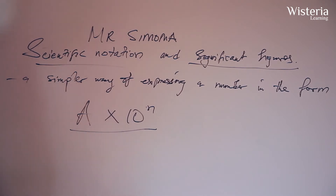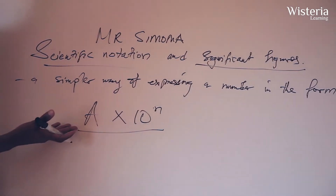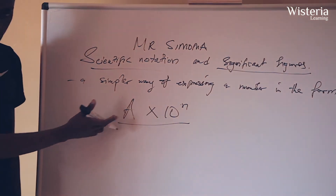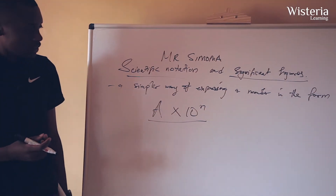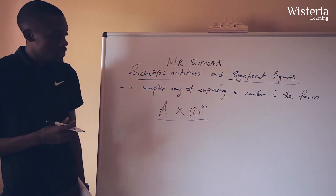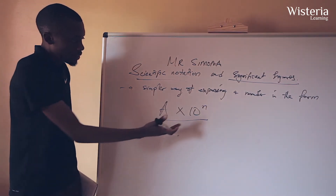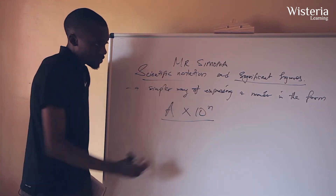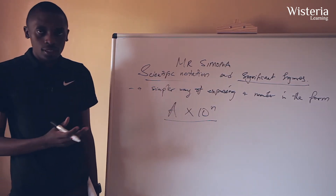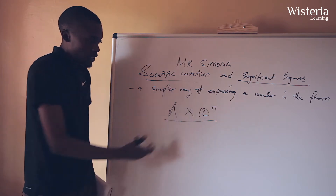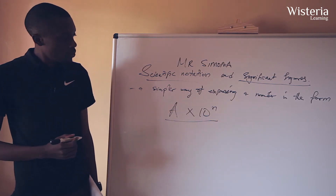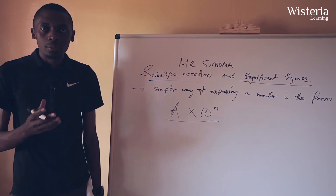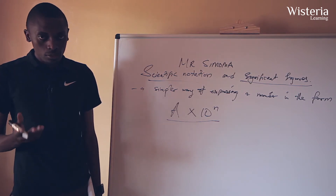What do we mean when we write it in this format? The 'a' is a number that is greater than 0 and less than 10. And the 'n' is how many times you've raised that number to an exponent — the power of 10. Now we are going to have examples to see how we can express numbers in scientific notation.